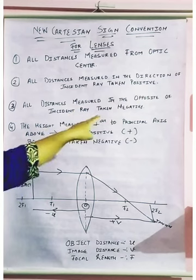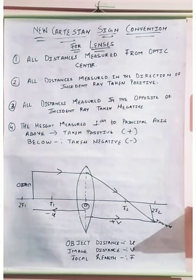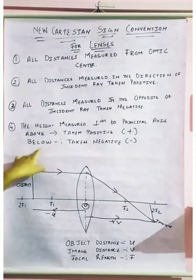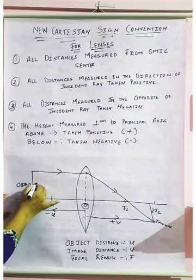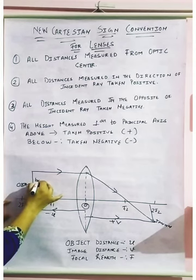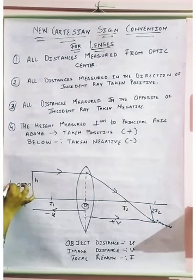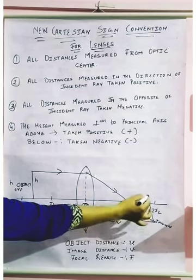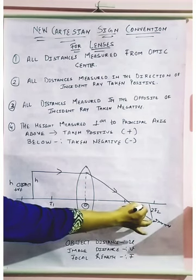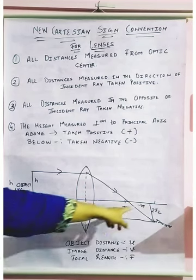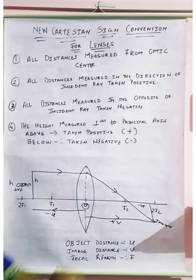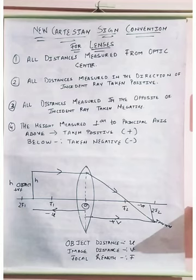Now, heights measured perpendicular to the principal axis: above the axis are considered positive, and below the axis are considered negative. So the height of the object above the axis is positive, and if the image is formed below the axis, that height is considered negative.